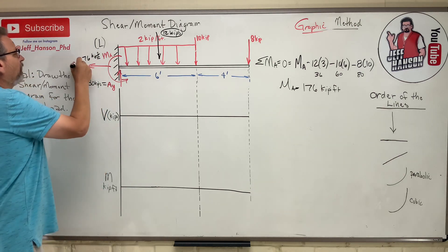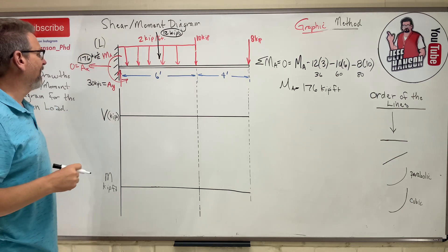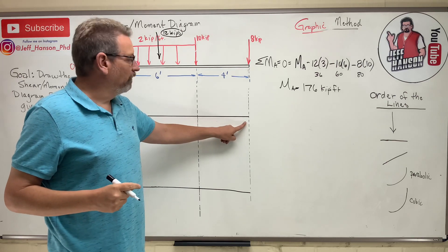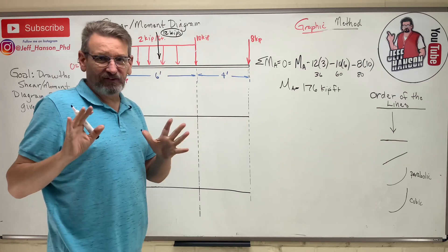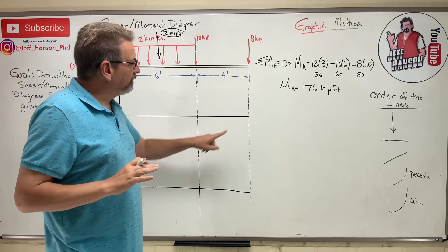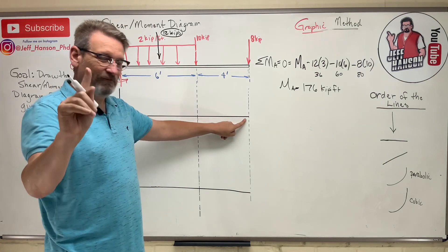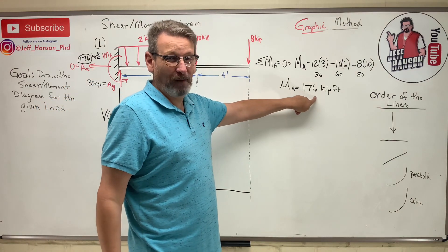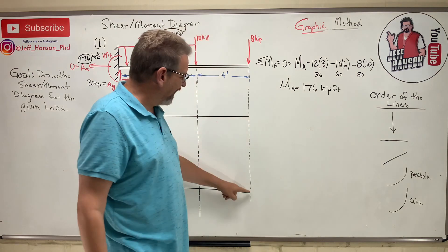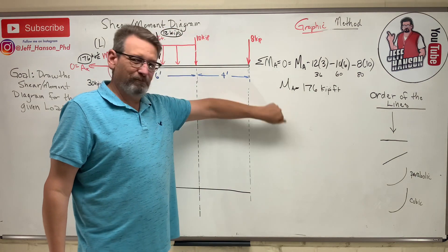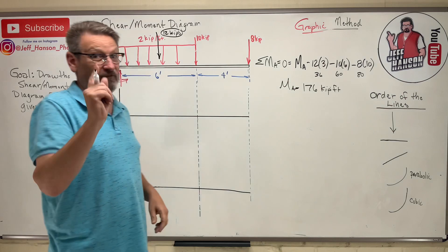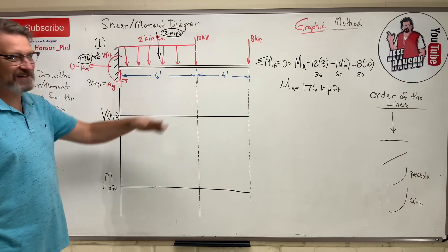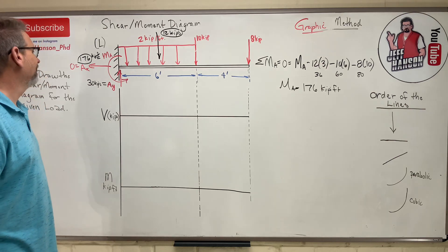If you get Ma wrong, you won't get back to zero at the end of the diagram. That's your check — if you don't reach zero on the V graph and M graph, go back and check your global equilibrium first. That's where most mistakes happen. Once you find a mistake, you have to go back to step one.